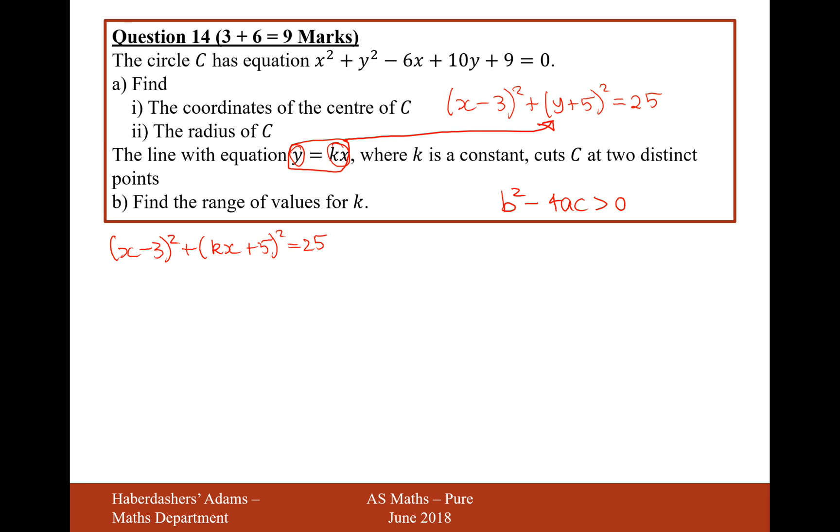We need to now expand this and get it all in terms of a quadratic, just one quadratic. It's going to be x squared minus 6x plus 9 plus k squared x squared plus 10kx plus 25. That's what happens when you expand both of these square brackets here. We've got 25 on both sides here, so we'll just cancel that out and put 0 on the right-hand side. Let's now factorize what we've got and group everything together because we want all of our x squared together, all of our x's together, and all of our numbers together.